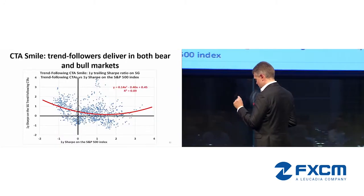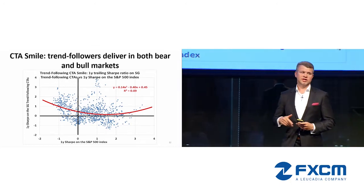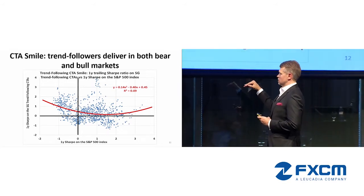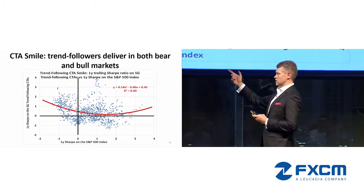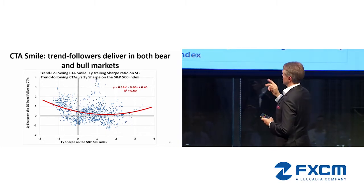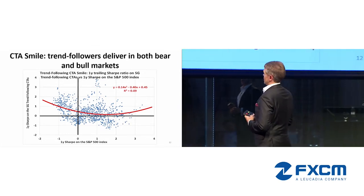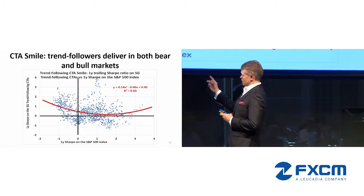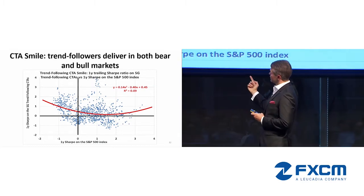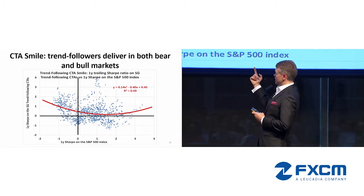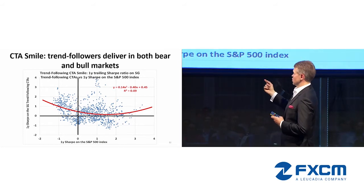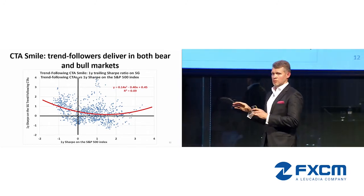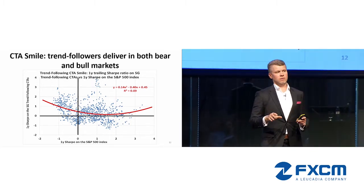This is what people call the CTA Smile. We can look at the trailing Sharpe on the S&P 500 versus the trailing Sharpe on the CG-CTA index. There is obviously a lot of noise, but we see the pattern: when the trailing return on the S&P is negative, CTAs tend to produce good Sharpe ratios. On the other spectrum, strong bull markets are also not harmful for these strategies.